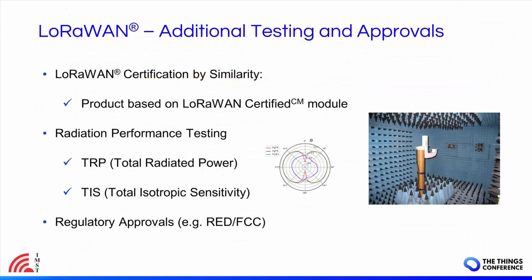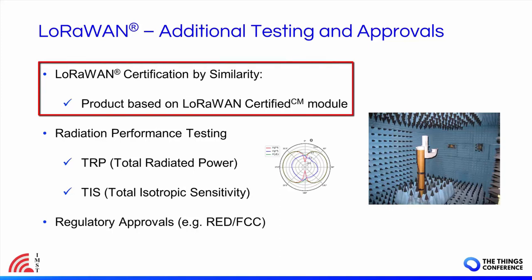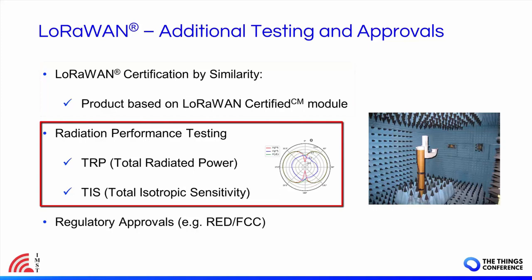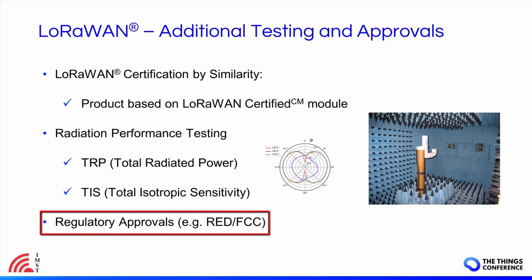Besides the LoRaWAN certification, additional testing may be of interest. If your product is based on an already LoRaWAN certified module, you may request a LoRaWAN certification by similarity, which simplifies the certification process. Additionally, radiation performance testing will provide full radiated power and sensitivity figures for the device — for this you should contact a LoRa Alliance authorized test house. Finally, don't forget that regulatory testing is not part of the LoRaWAN certification process, but this approval is required to release a new product to market and can take place before, after, or at the same time as LoRaWAN certification testing.